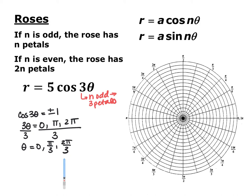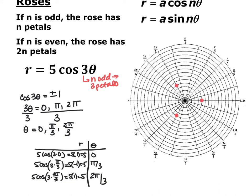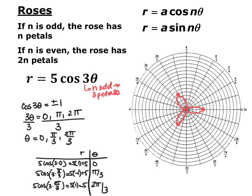Using those three angles: at theta equals 0, r equals 5 times cosine(0) equals 5, so go out 5. At pi over 3, r equals 5 times cosine(pi) equals negative 5, which flips across the pole. At 2 pi over 3, r equals 5 times cosine(2pi) equals 5, going out 5 again. These give the three longest petals. Connecting the dots in a daisy-like shape produces the three-petal rose. It's called a rose but really looks more like a daisy.